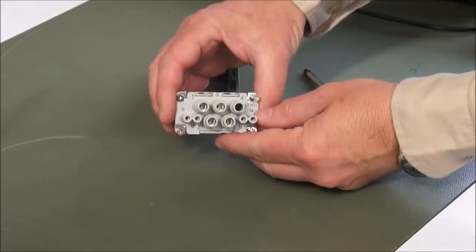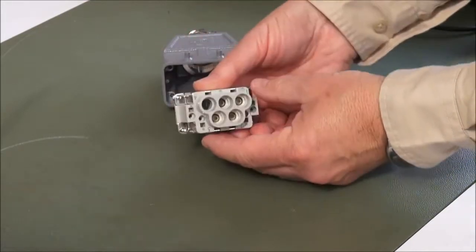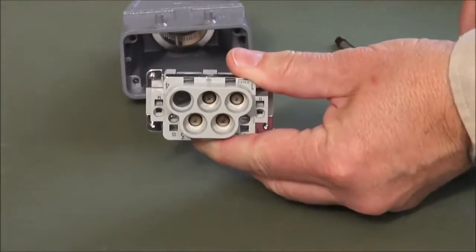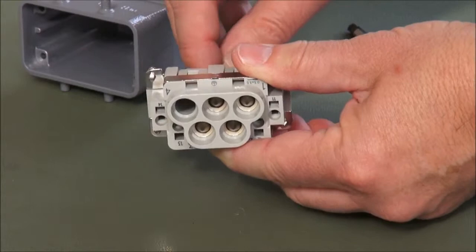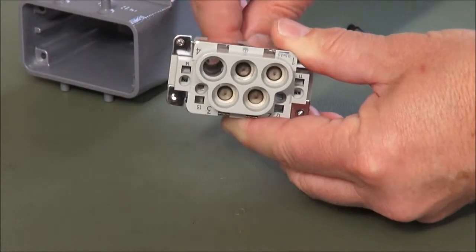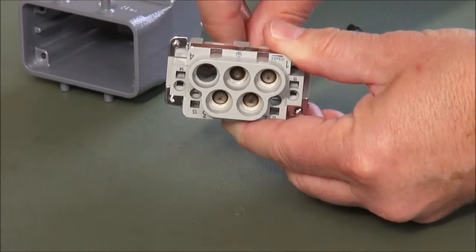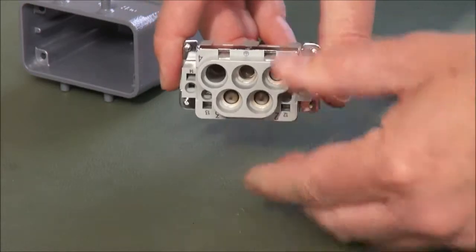And the critical thing on the back of the Harting connector where the cables go in are these conical clamps. And these conical clamps are operated so that you retract the conical clamp like this and then you would put in the appropriate cable around the clamp.